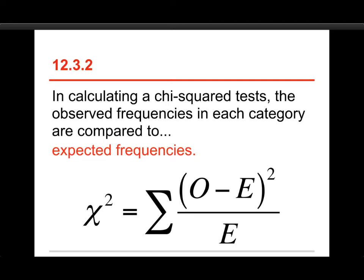We got the chi-squared on the left, and we are summing up, we're looking at O is the observed frequencies in each of the categories, and E is the expected frequencies.